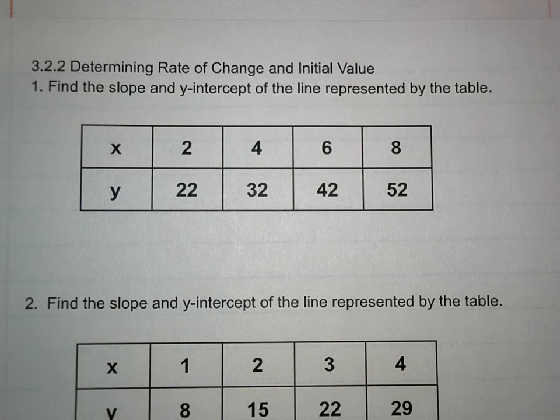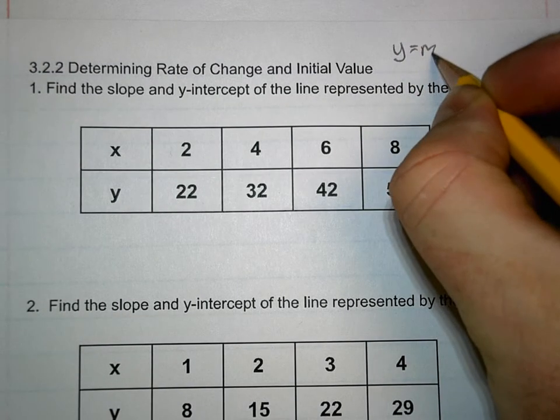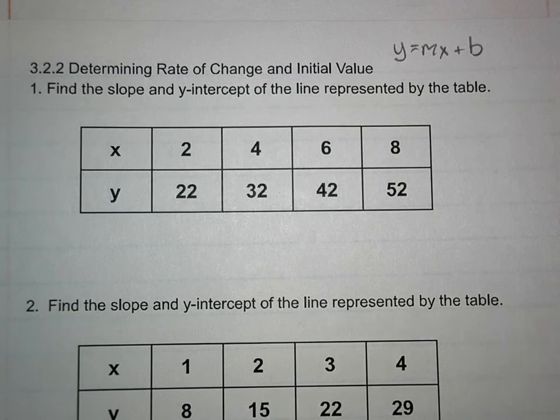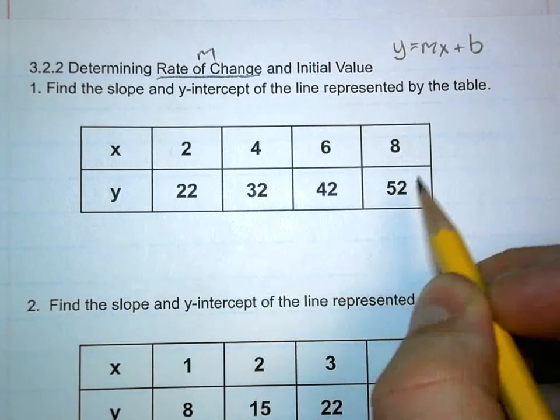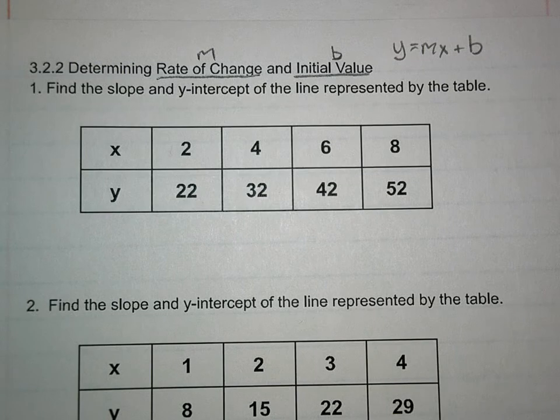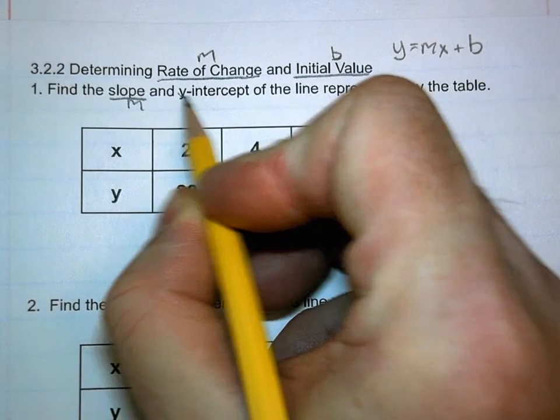This is our lesson on determining rate of change and the initial value. Rate of change is slope. That's what we're looking for. When we do this, we're always going to be thinking about y equals mx plus b. That's the important thing. Rate of change is our m, and initial value is our b. We also call it the slope. Slope is our m, and y-intercept is our b.